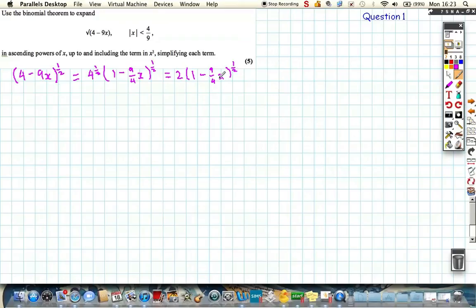Now, we can expand the bracket with the power of a half using a nice form. So let's write out 2 times big square brackets. And then we have 1 plus nx. So n is a half, our x is minus 9 over 4x.